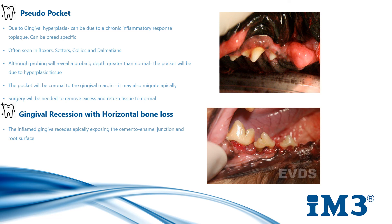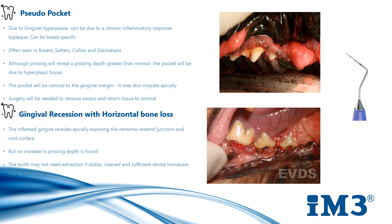The other thing we might come across is gingival recession with horizontal bone loss. The inflamed gingiva recedes apically, exposing the cemento-enamel junction and root surfaces, but there's actually no increase in the probing depth. The tooth may not need to be extracted, certainly if it's stable — it may just need to be cleaned sufficiently, and then dental home care can be provided.